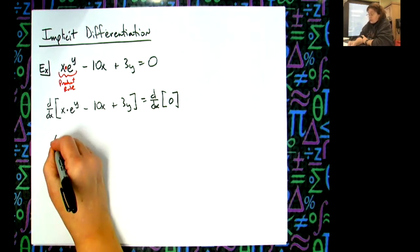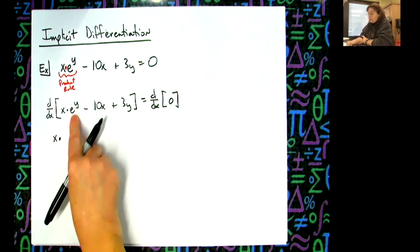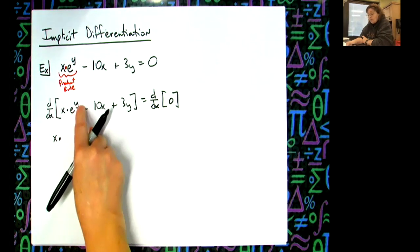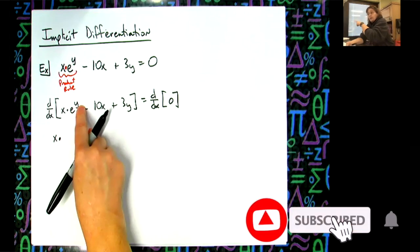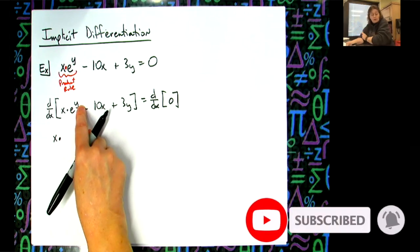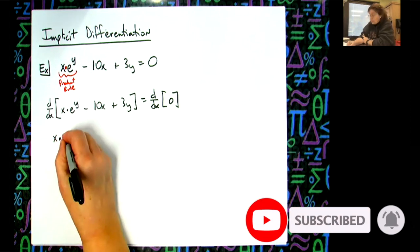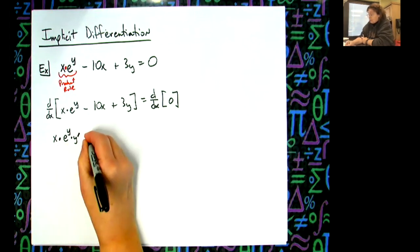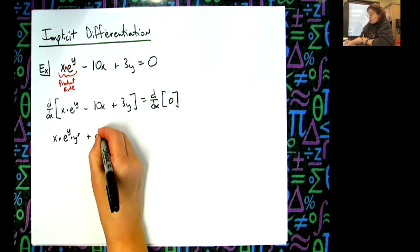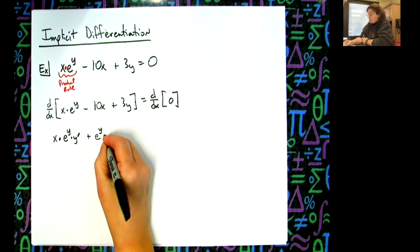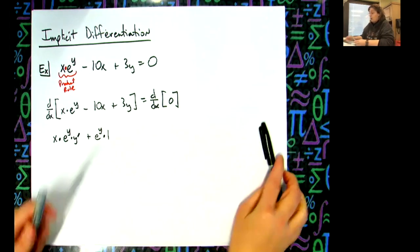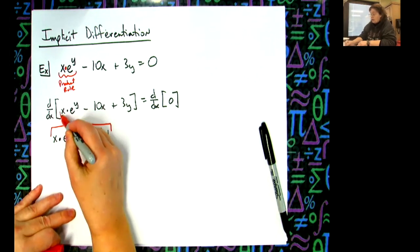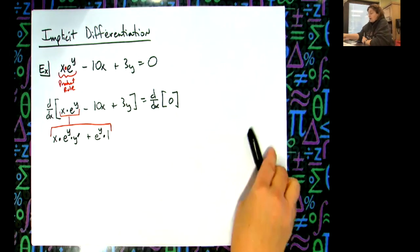Now I'm going to start my product rule here. I'm going to have the first term times the derivative of the second one. Can we do this in our head? I'm hoping so. E to the y, implicit differentiation, y prime. So e to the y y prime. That's my first one. Plus the second term, e to the y, times the derivative of the first one. Derivative of x is just one.